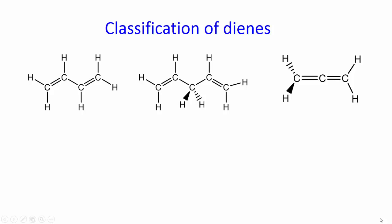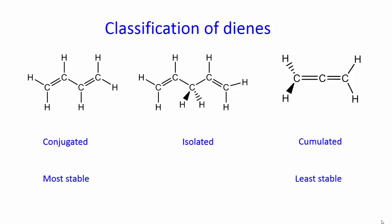Classification of Dienes. There are three kinds of dienes: conjugated, isolated, and accumulated. Conjugated dienes are the most stable, followed by isolated, and accumulated dienes are the least stable and most reactive.